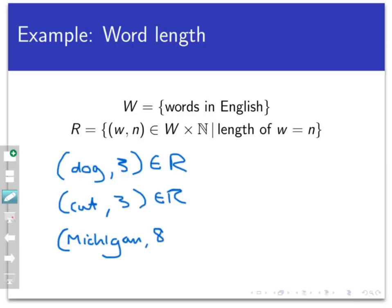What this relation really is is like a very simple database where you could look up a word and it tells you how long the word is. An example of a pair that would not belong to this relation would be (dog, 2), because the length of the word dog is not equal to 2.